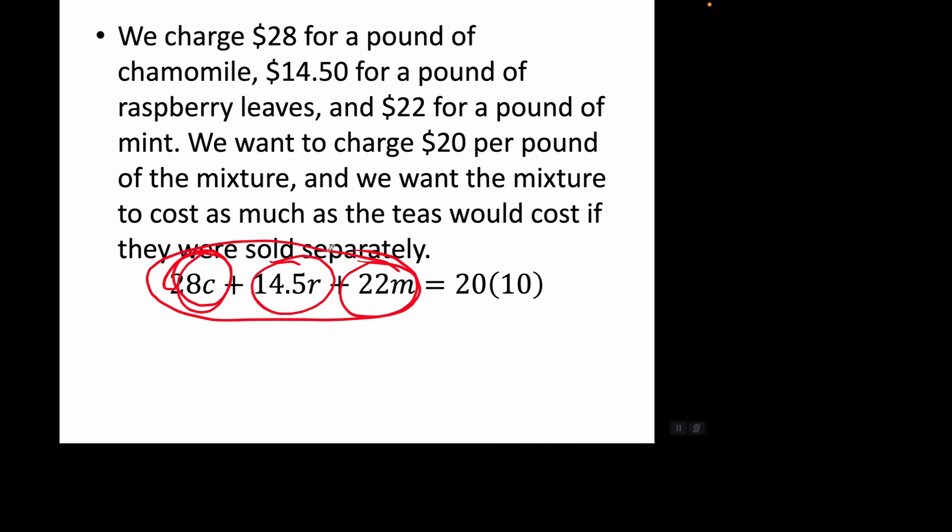That's if they are sold separately. But if they are all sold together, we have $20 for a pound of mixture and 10 pounds of mixture. So that's the cost if they are sold together. Cost if sold separately, cost if sold together. The two should be equal.